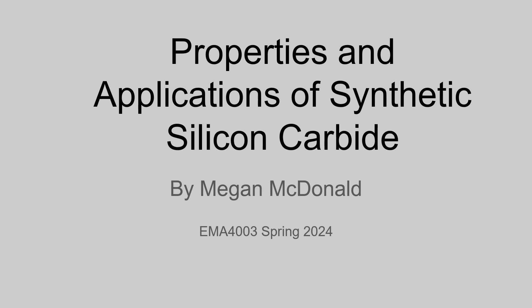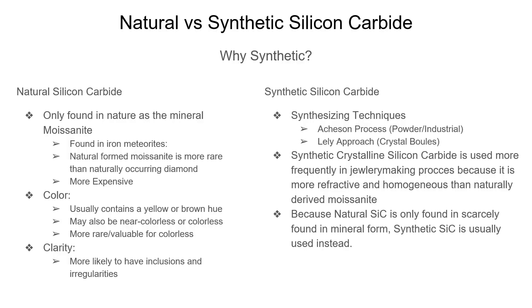Properties and applications of synthetic silicon carbide. Natural versus synthetic silicon carbide: natural silicon carbide is only found in nature as the mineral moissanite. It can be found in iron meteorites and it is very rare, which makes it very expensive. For these reasons, synthetic silicon carbide is generally used. Synthetic crystalline silicon carbide is also preferred in jewelry making processes as it is more refractive and more homogenous than naturally derived moissanite.